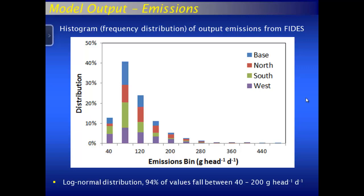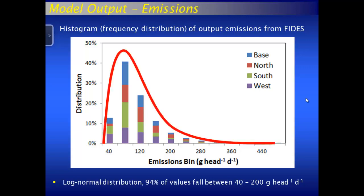This histogram shows a frequency distribution of all the emissions from all the data I've run through FIDES. The bins show how many times emissions fall between zero and 40, 40 and 80, 80 and 120 grams per head per day, and so on. You can definitely see a log-normal distribution. The values that fall between zero and 200 grams per head per day represent about 94% of all the emissions output I've gotten from FIDES.